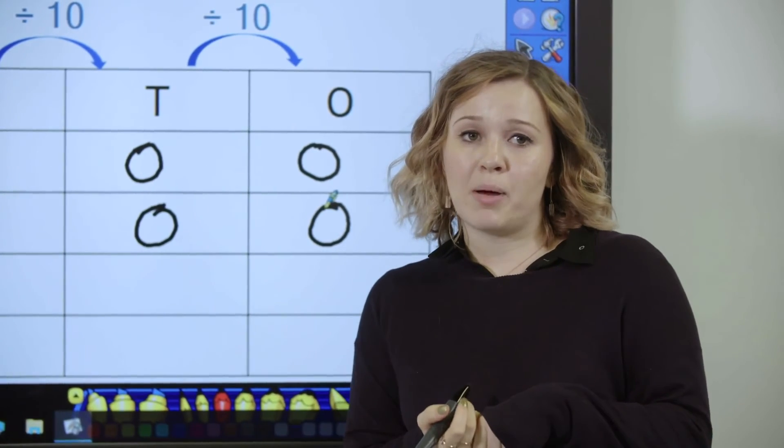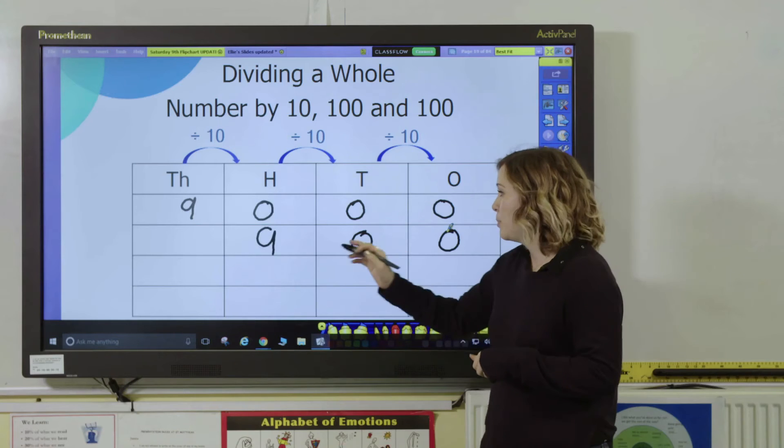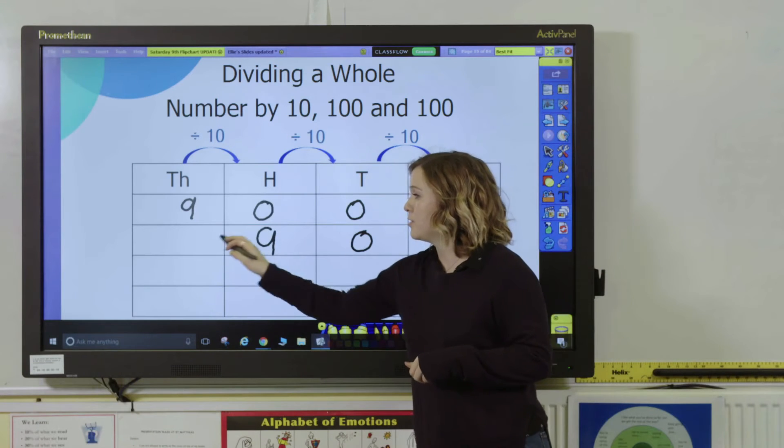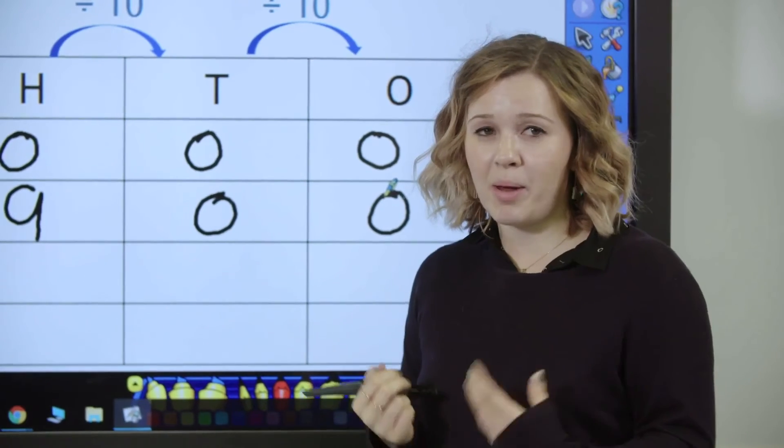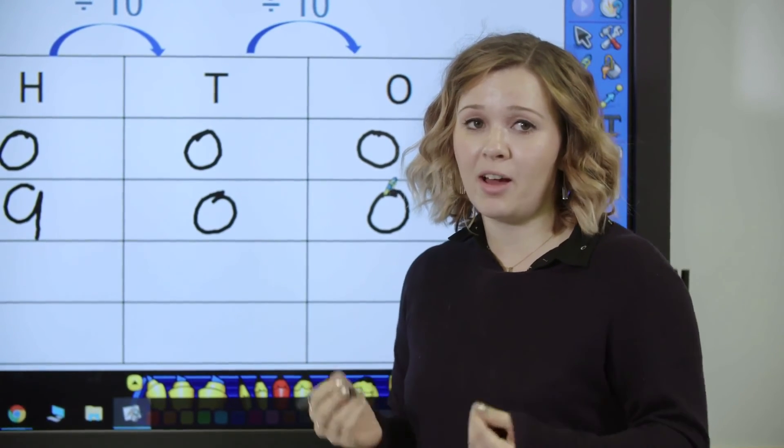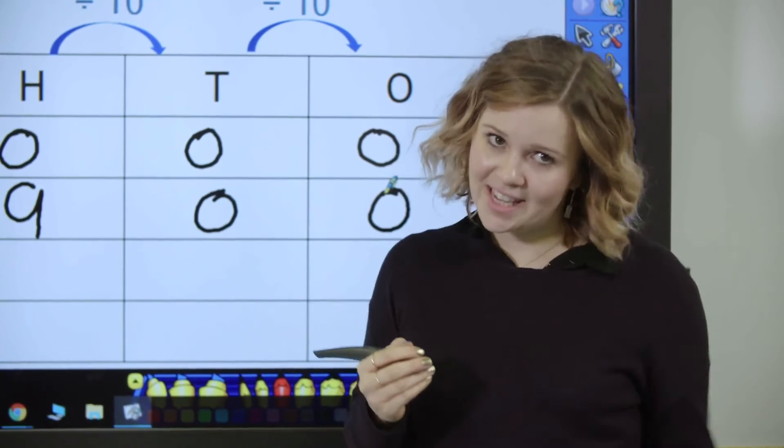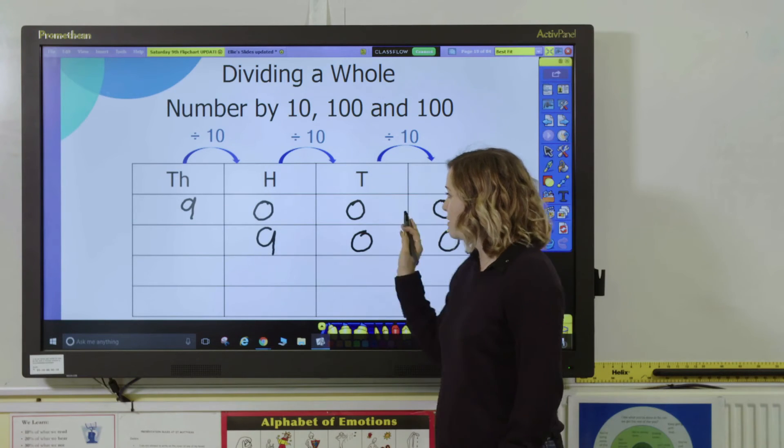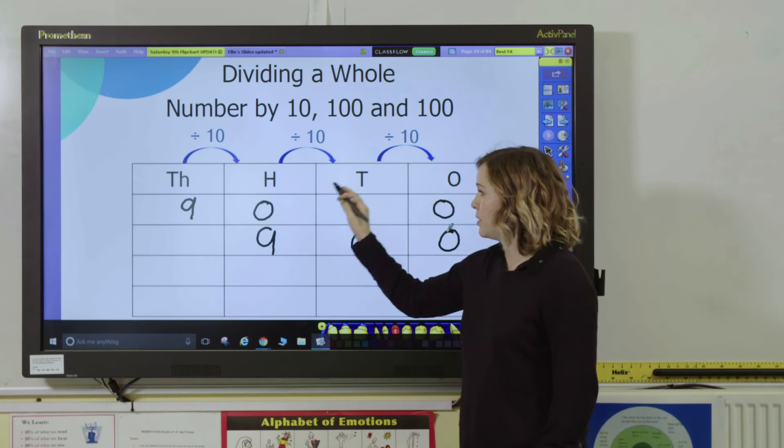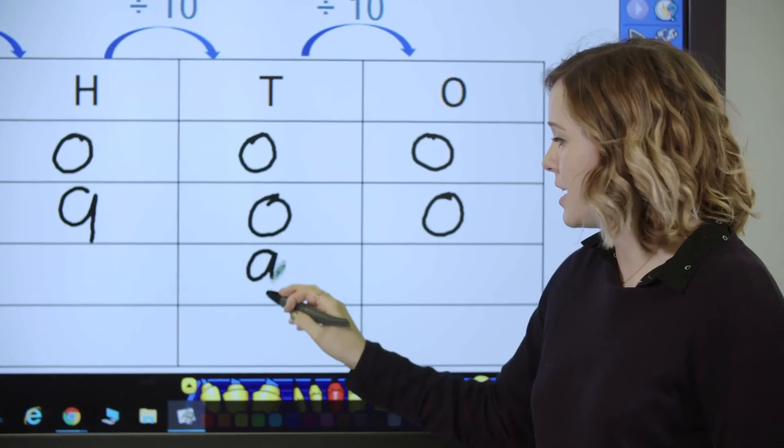Then when we move on to dividing by a hundred, pupils need to understand that the digits move two spaces to the right. And you can reinforce this understanding by explaining that as well as dividing by a hundred, you're dividing by ten and then by ten again. So if I divide nine thousand by a hundred, my nine moves two places over and goes into the tens column.